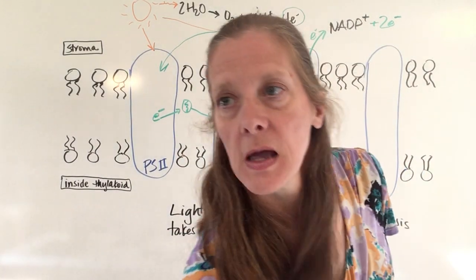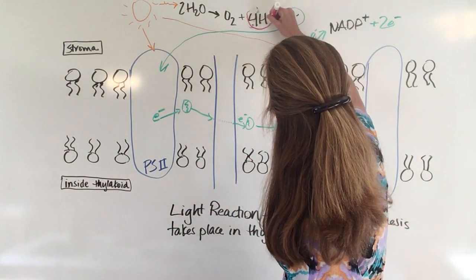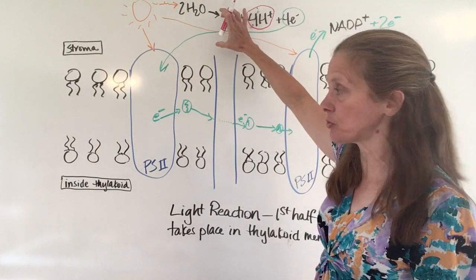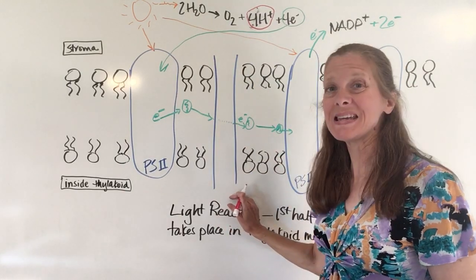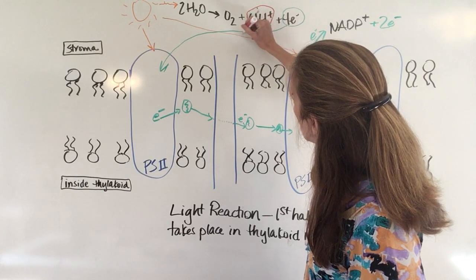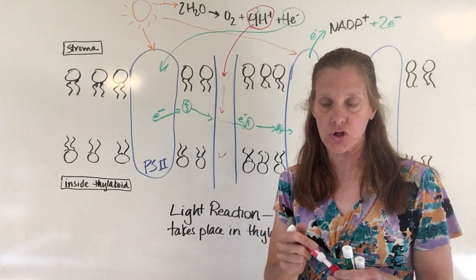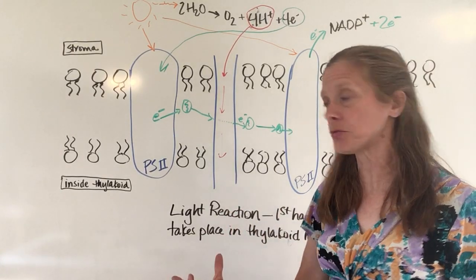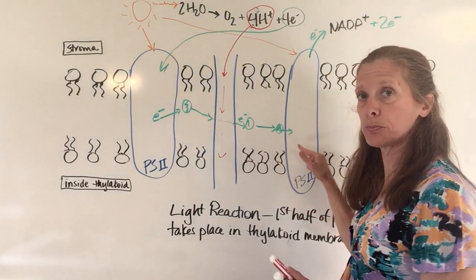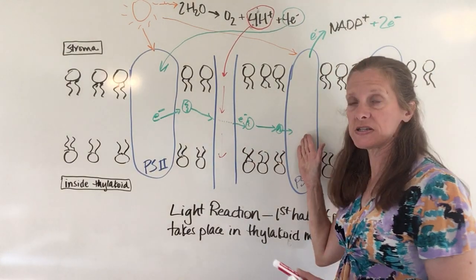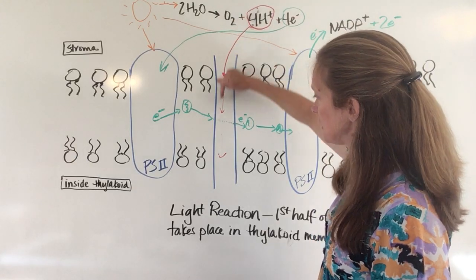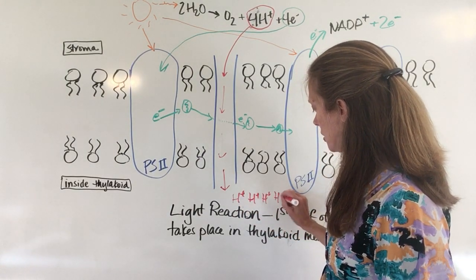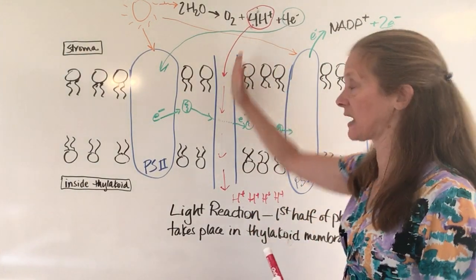The hydrogen from the water is out here in the stroma in high concentration. I need to pump it into the inside of the thylakoid, but this is going against the concentration gradient — it's high concentration outside and low concentration inside. The energy released by electrons jumping along the electron transport chain powers these hydrogen ions to be pumped through, so now there's a high concentration of hydrogen ions inside the thylakoid.